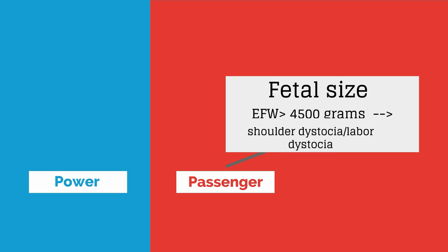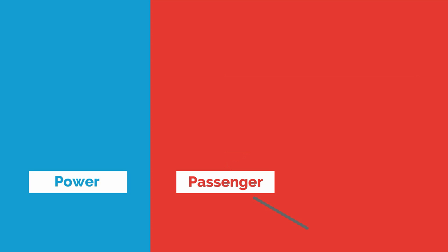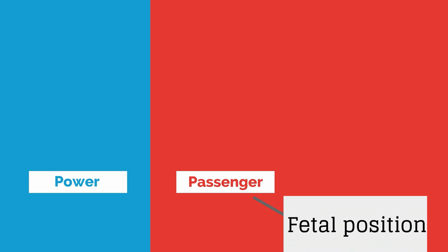Next let's move on to the passenger. Ideally the fetus is not too big and is in a good position for delivery. If the fetus has an estimated weight greater than 4,500 grams, the risk of shoulder dystocia and labor dystocia are greater. The fetal position is important as well, for ideally you want the fetus positioned in the optimal way to be able to fit through the pelvis. Let's review the bony landmarks of the fetal vertex.